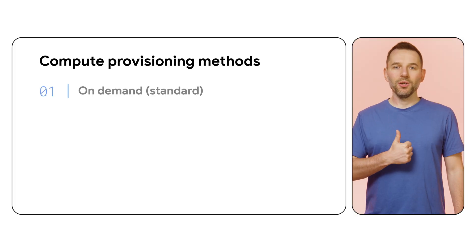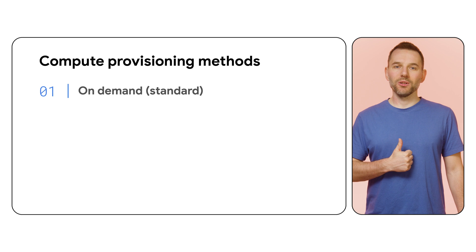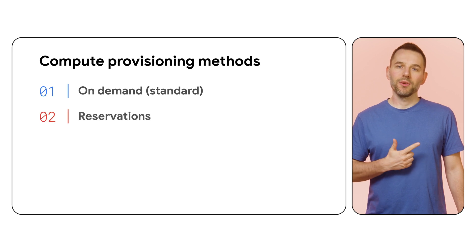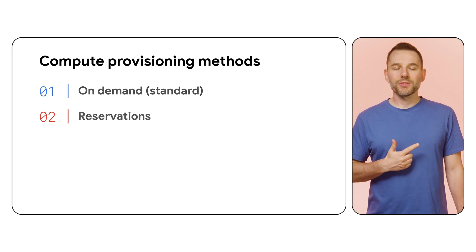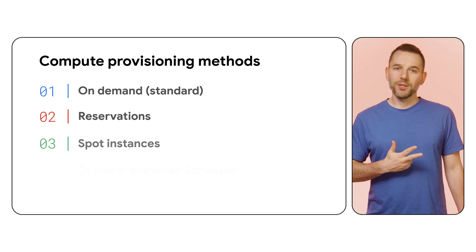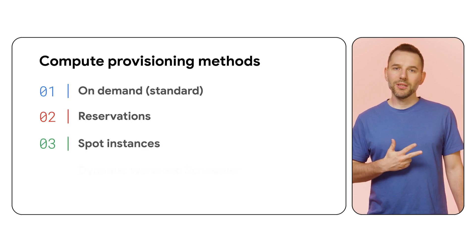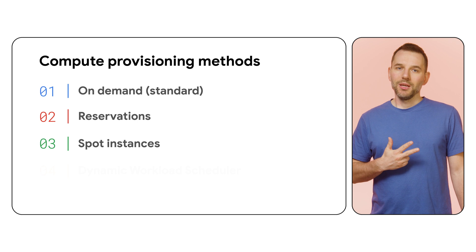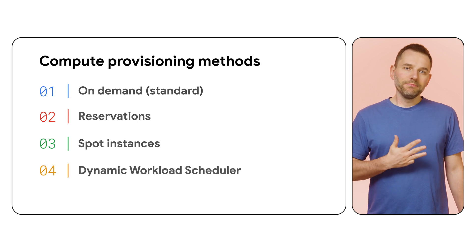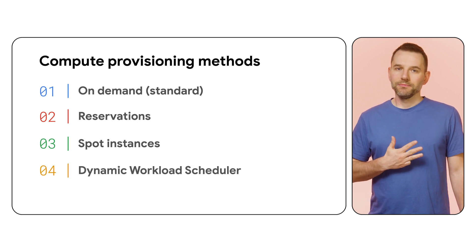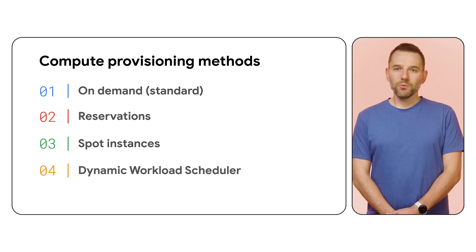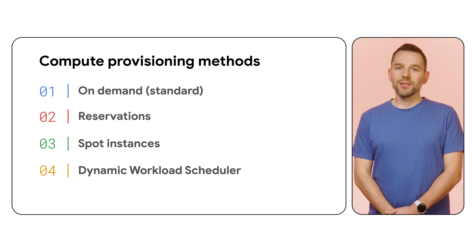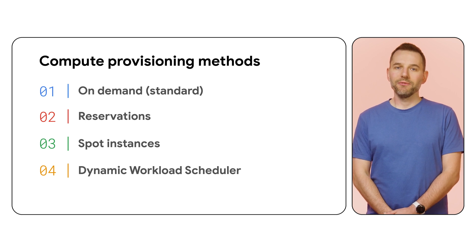Those are: 1. On-demand — the default, most intuitive path, also called standard instances. 2. Through reservations, when the availability of the resources is critical. 3. Spot instances, for workloads that tolerate occasional machine disappearance. 4. Dynamic Workload Scheduler — this method allows you to plan your workloads and run them when required resources are available.